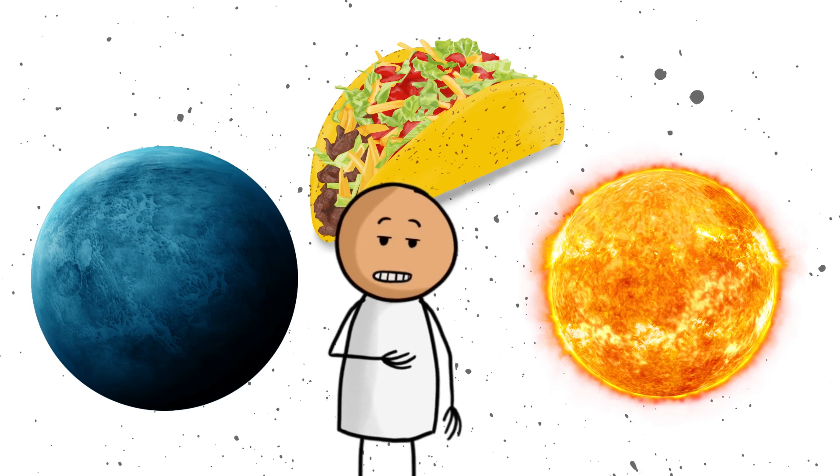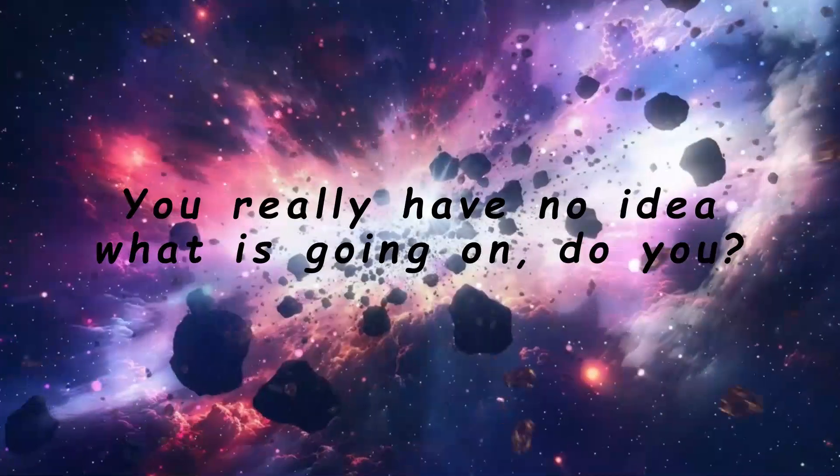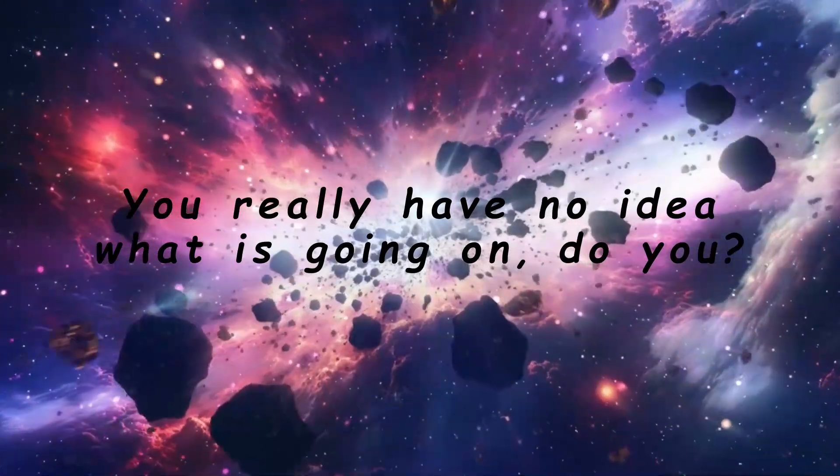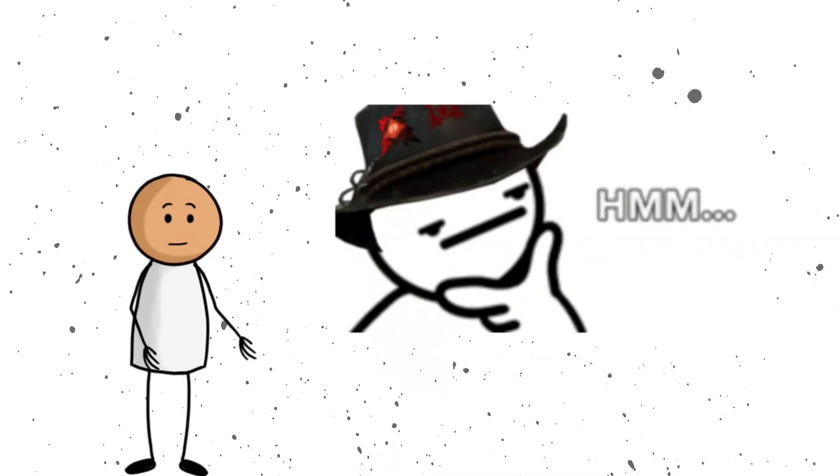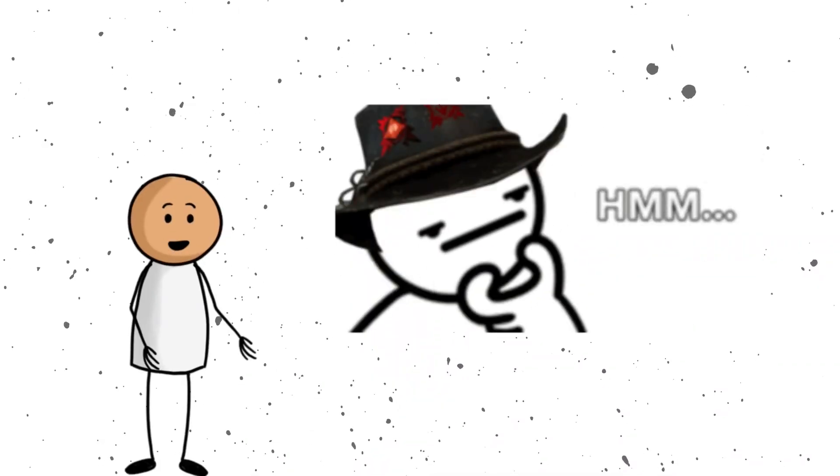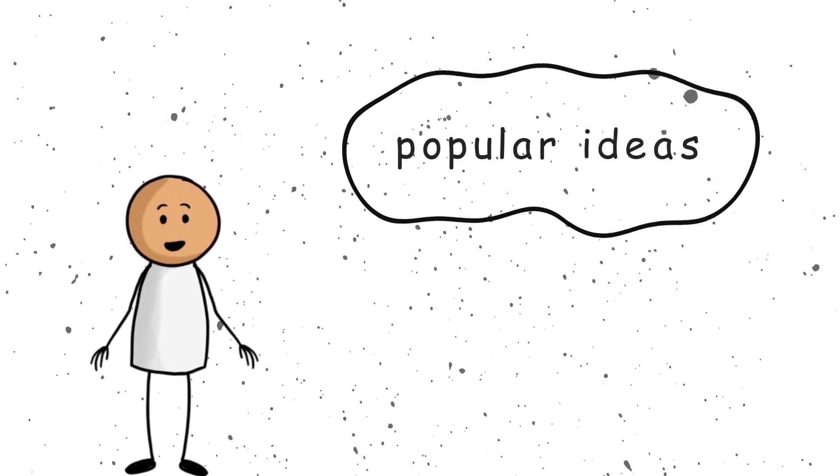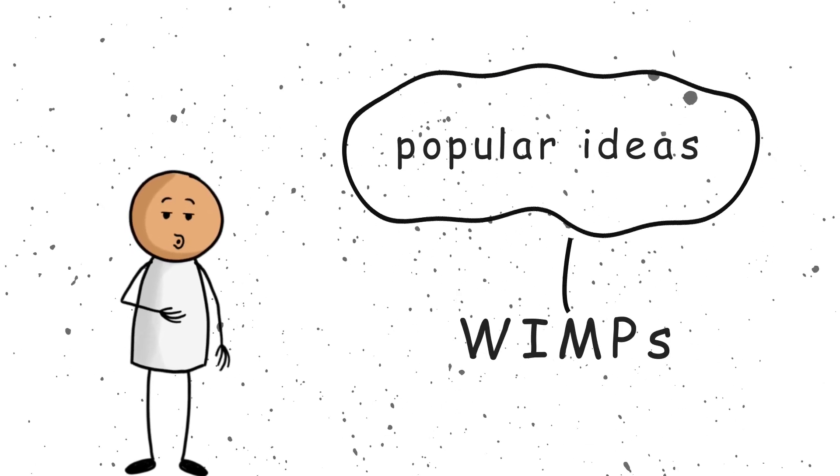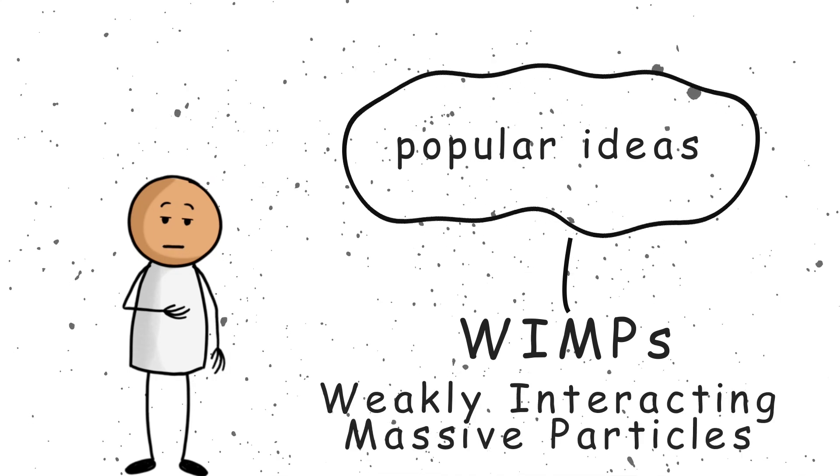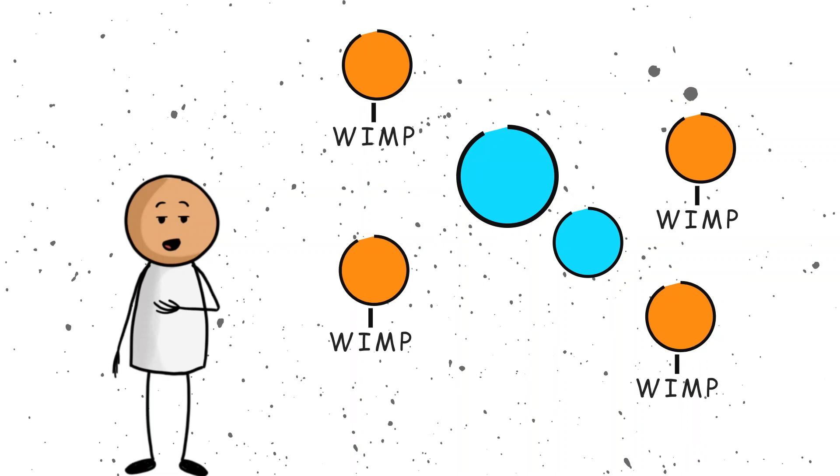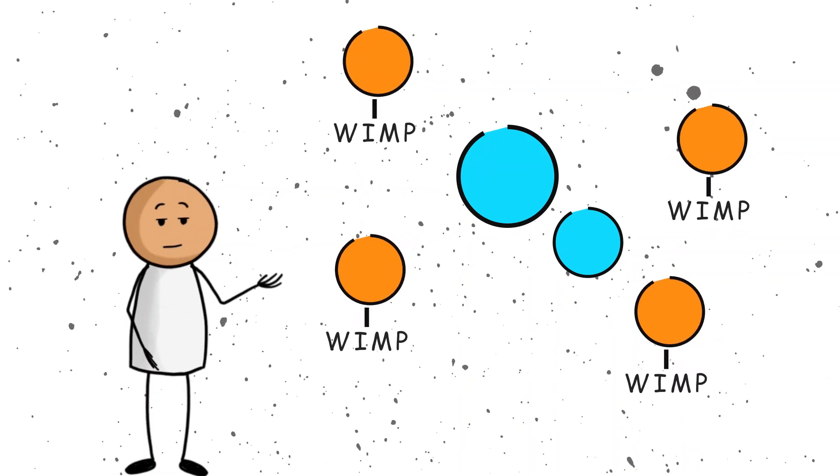The rest, a mix of dark energy and dark matter. Both are the universe's way of saying, you really have no idea what is going on, do you? But wait, it gets better. Scientists have come up with some pretty interesting guesses about what dark matter might be. One of the most popular ideas is something called WIMPs. Not wimpy scientists, but weakly interacting massive particles. These are particles that barely interact with normal matter. They are so shy, they make introverts look like stand-up comedians.